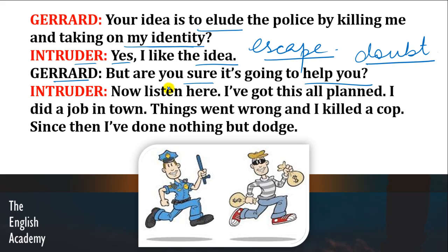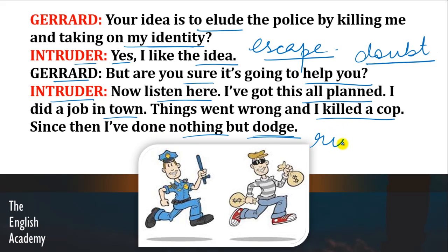Intruder says: 'Now listen here, I've got this all planned. I did a job in town, things went wrong and I killed a cop. Since then I've done nothing but dodge.' Dodge means to run, to try and escape from someone, to avoid someone.